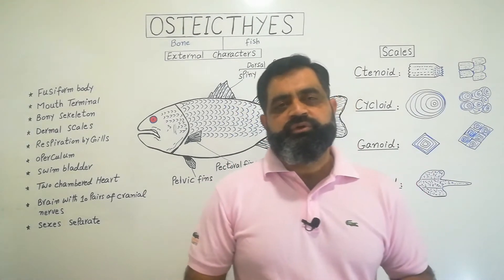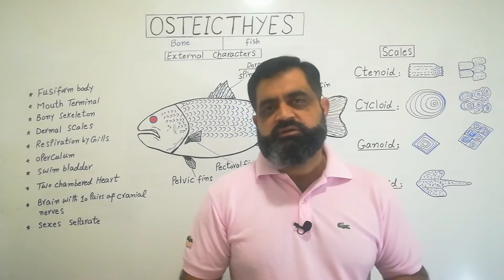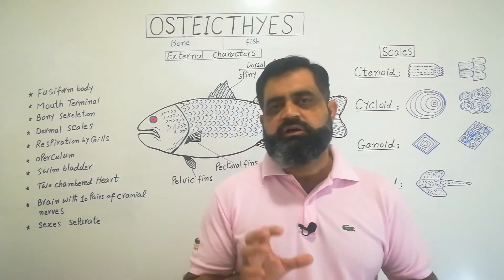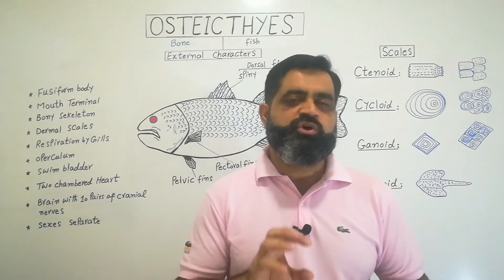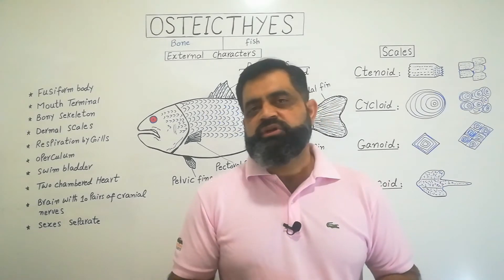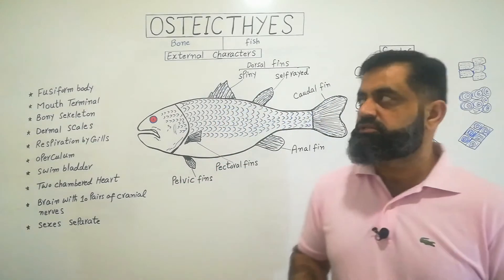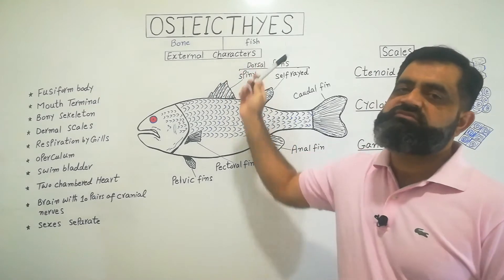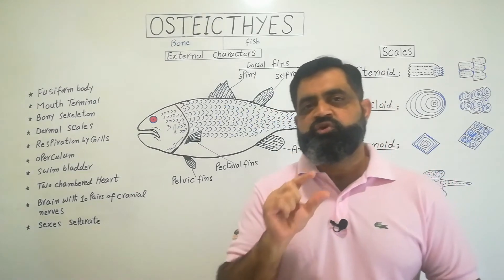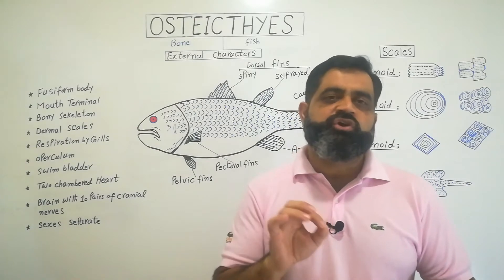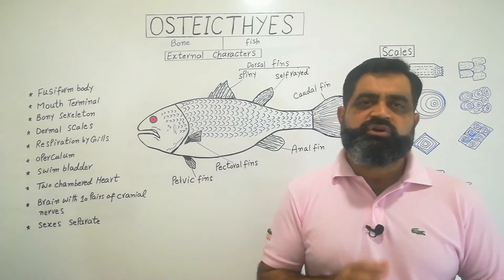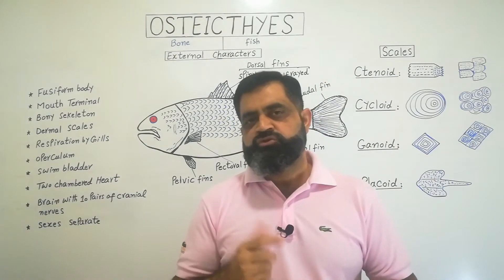Hello to all students. Today we are going to discuss some external features and general characteristics of Osteichthyes. As we know, phylum Chordata contains a superclass known as Pisces, which includes all the fishes. In Pisces there are subclasses and classes. Today we are going to discuss class Osteichthyes — 'osteo' means bone and 'ichthyes' means fish, so these are fishes that have bones in their body, also known as bony fishes.